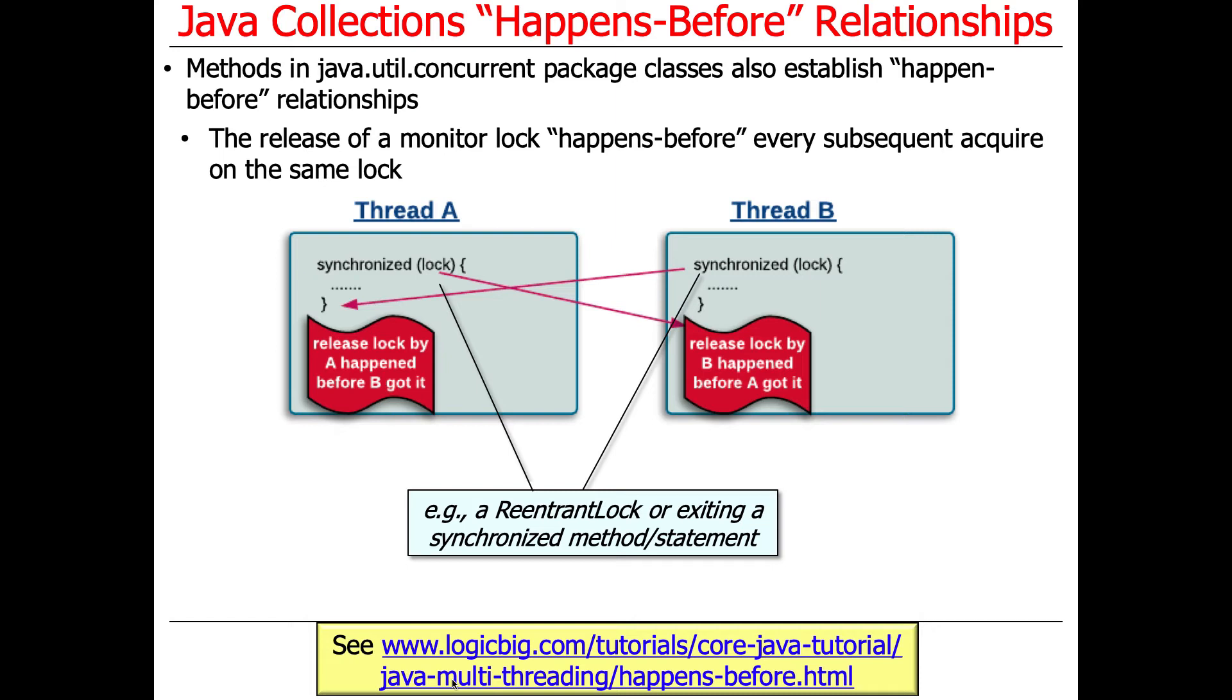In here, this is locked. This guy comes along. What is it saying here? Released lock by A happened before B got it. Right, so this is saying that when, assuming that A gets locked before B, this guy's going to be waiting for this lock to unlock. And when this lock is released, then any change that happens to be made in this synchronized statement will then be available in thread B when it acquires the lock.